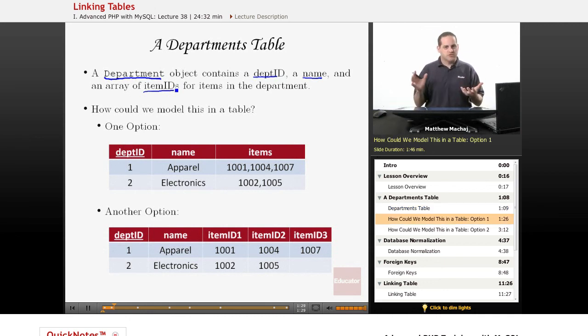So how could we model this in a table? There's a couple of different things that we could do. For example, we could create a table that maps one column to each property of our object. We could have a column called department ID, which would be the primary key of the table. It's a unique ID for each department. We could have a column called name, which would be the name of the particular department. And then we could have a column called items, which would be used to hold the information about all of the different items that are in a particular department.